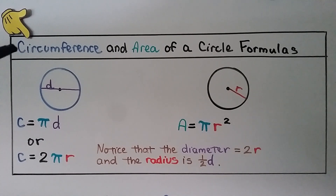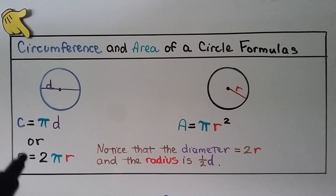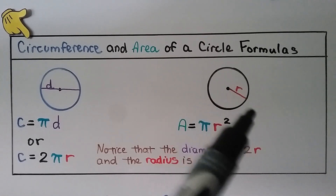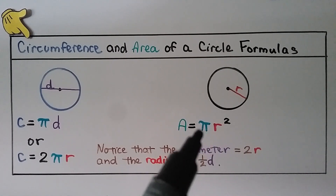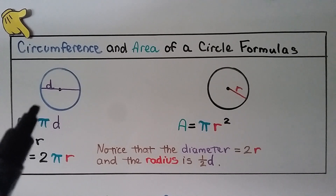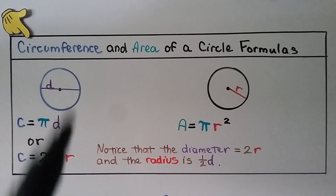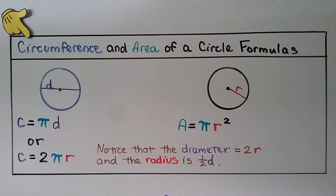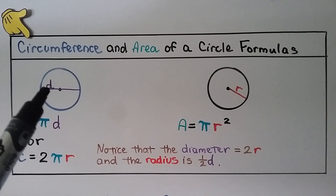Here are the circumference and area formulas for a circle. The circumference c equals pi times d, the diameter. We can also say circumference c equals 2 pi r — 2 times pi times the radius. The area equals pi times the radius squared. Note that the diameter equals 2r, and the radius is half of the diameter. If a problem asks you to use the diameter but gives you the radius, just double it; if it asks for radius and gives the diameter, divide by 2.